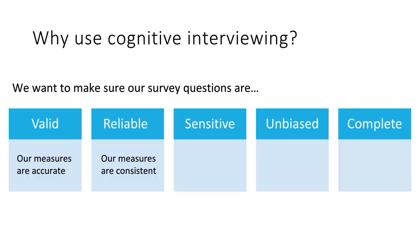Thirdly, we want to make sure our questions are sensitive, in that they are appropriate to ask and measure real change and differences. For example, if we wanted to measure how long individuals spent watching television on an average day, with response options being less than an hour, more than one hour but less than two hours, and more than two hours — in a cognitive interview, we could explore whether the option 'more than two hours' would be suitable enough to capture how much television people watch in an average day, or whether it would need to be higher.